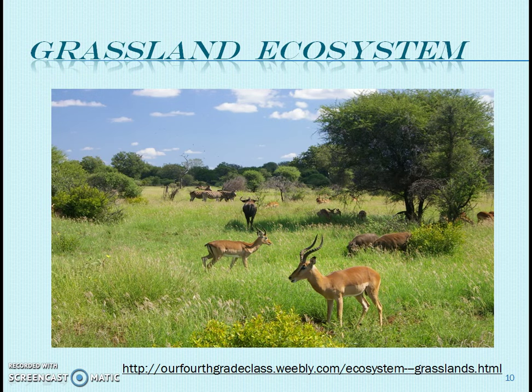Grassland ecosystem: An ecosystem whose dominant species are various types of grass is called a grassland ecosystem. It is dominated by grass species, but sometimes low plants and a few trees or shrubs are also present. Types of grassland ecosystem include tropical grassland, which is present near tropical rainforest and is also called savanna in South Africa, and temperate grassland, which grows on flat or gentle slope hills. The last type is polar grasslands.